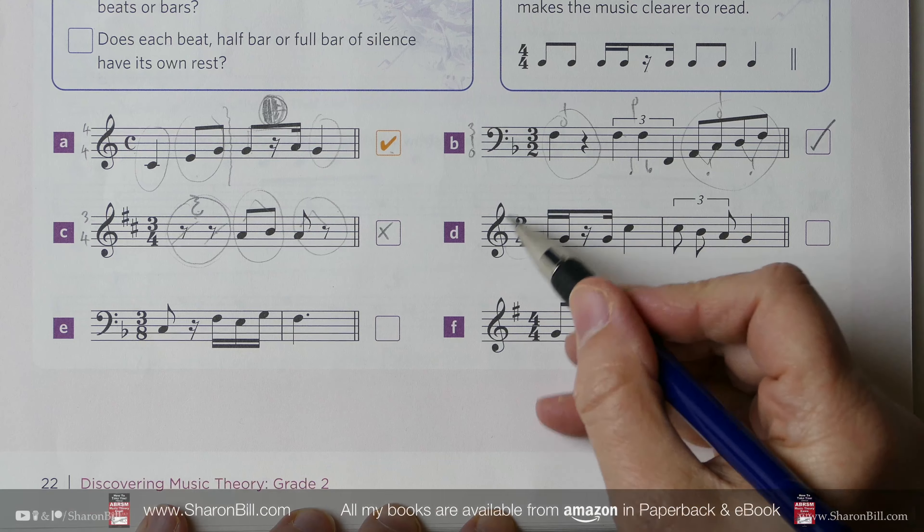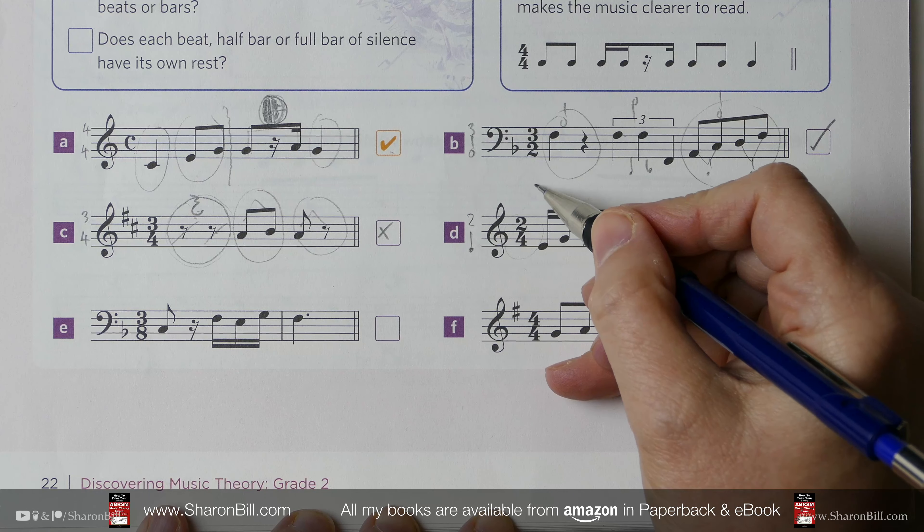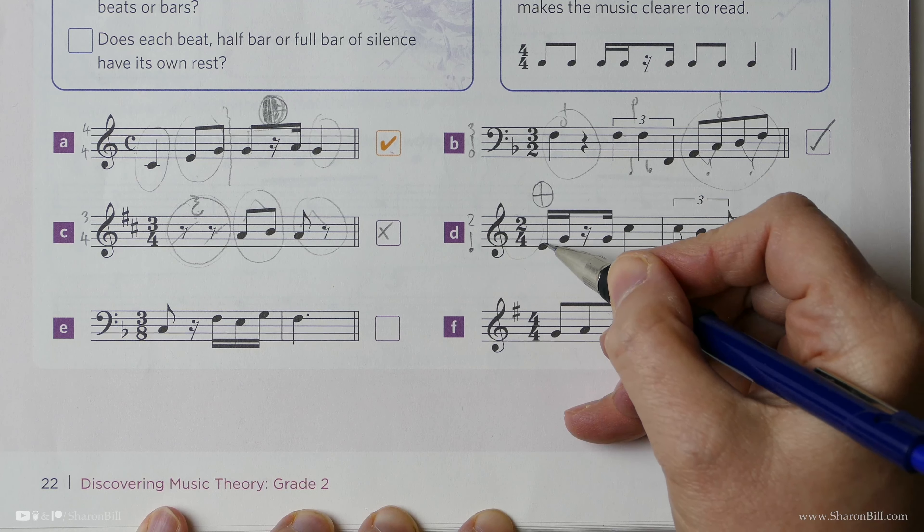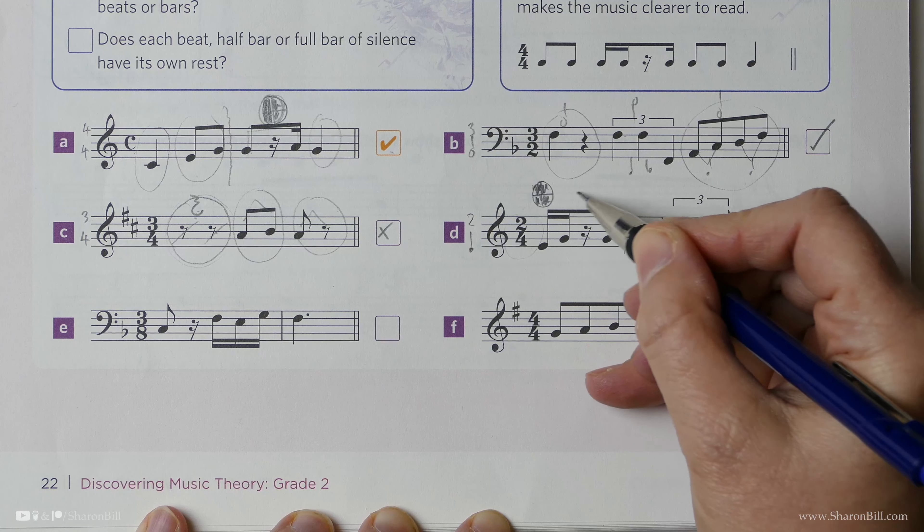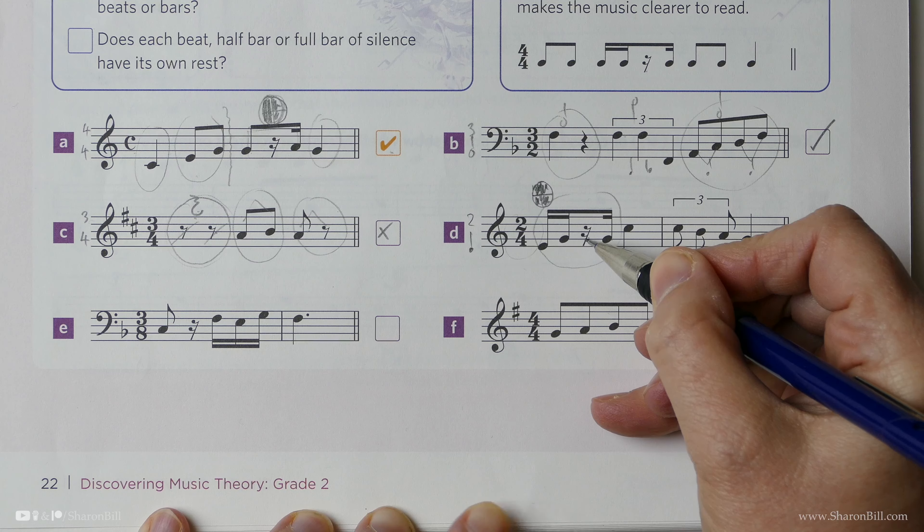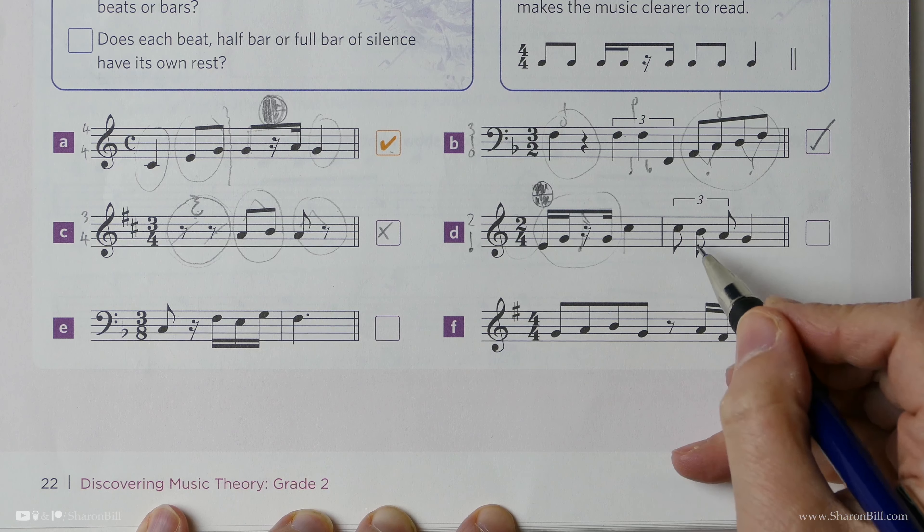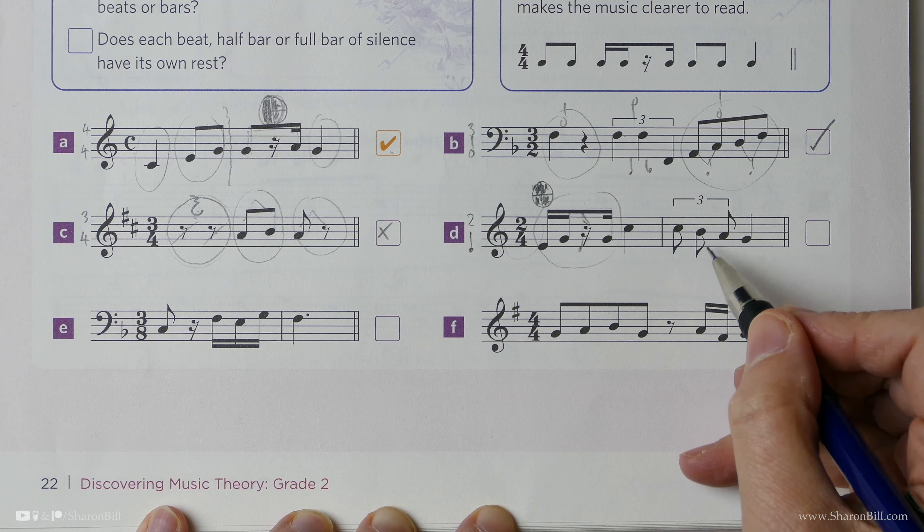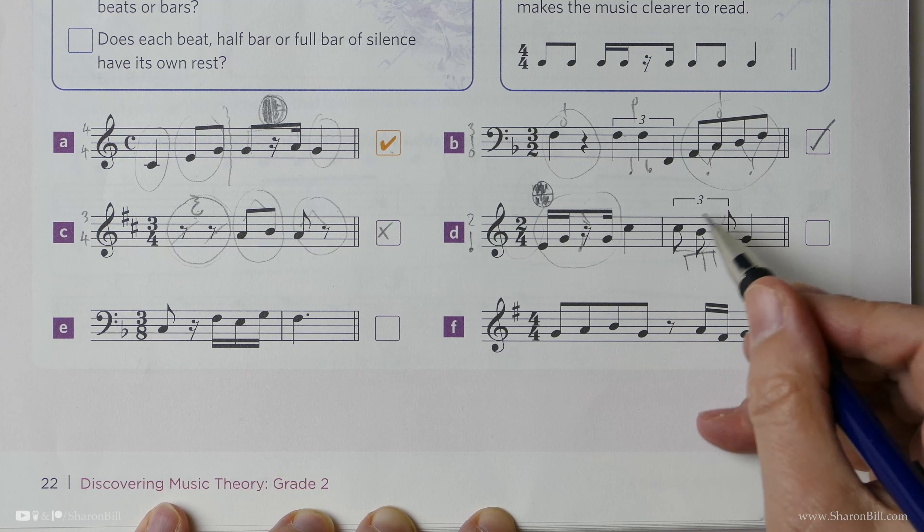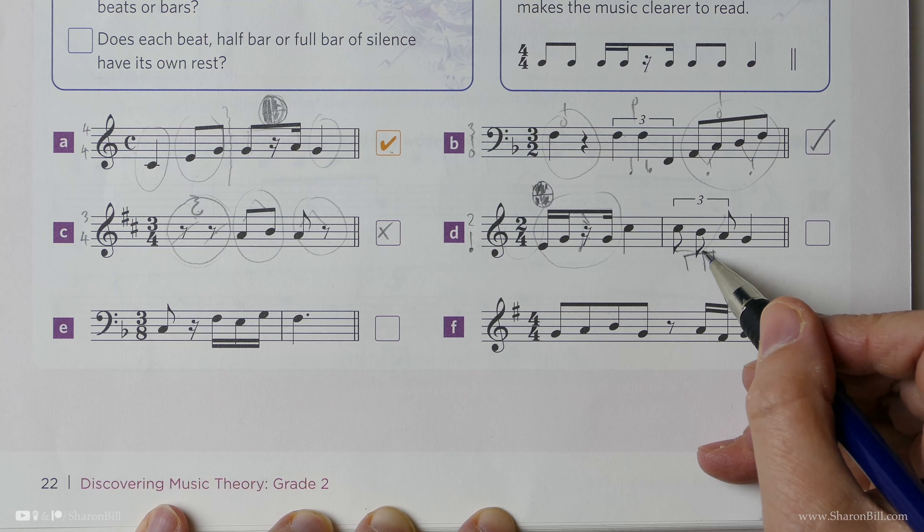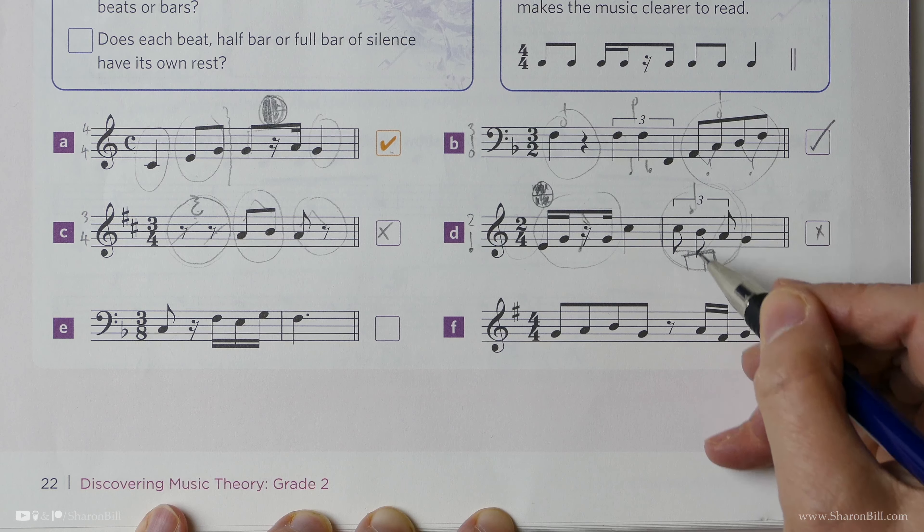So here we should have 2 crotchet beats per bar. And so remembering that 1 crotchet divides into 2 quavers or 4 semiquavers, we have semiquaver, semiquaver, semiquaver rest, semiquaver note, all of that is 1 crotchet beat properly beamed with the rest just taking the place of a semiquaver note there, that's correct. There's beat 1, there's beat 2, 3 quavers in the time of 2, but they should be beamed, shouldn't they? Quavers should be beamed, and so although that's the correct timing, they should be beamed together, so that's not correct. We should join those together to show there's our crotchet beat 3 in the time of 2.